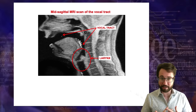Now let's talk about the vocal tract — the stuff above the larynx. The vocal tract has a bunch of things called articulators. Articulators are parts of the vocal anatomy that can move to filter the air coming through the larynx to produce all the sounds of a language. We'll start from the front of your mouth and go back. The first major set of articulators is your lips — used to make sounds like P, B, and M.